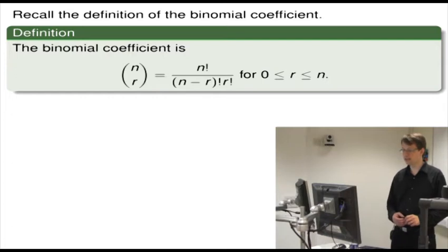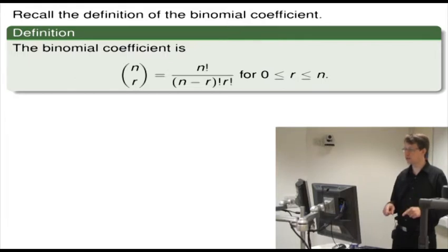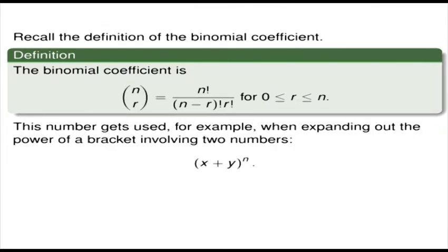Let's do another example. Recall the definition of the binomial coefficient: n choose r equals n factorial over n minus r factorial times r factorial, for 0 less than or equal to r less than or equal to n. This number gets used, for example, when expanding powers of a bracket like x plus y to the power n, and also a lot in statistics and probability. I'm assuming you've met the binomial coefficient before.